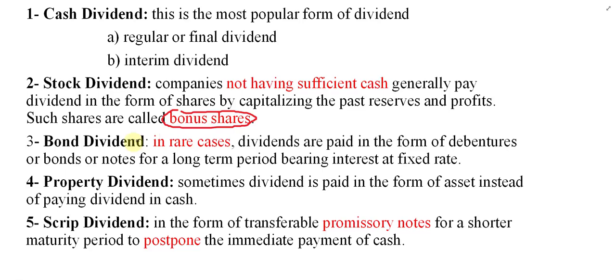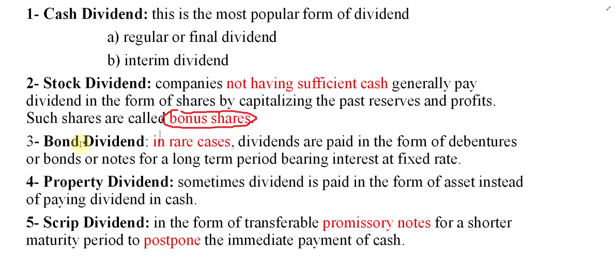The next type is bond dividend. If the company distributes bonds as a dividend among the shareholders, this is called a bond dividend. This rarely happens in business. It occurs when there is not enough cash and the company does not want to distribute shares; instead, they distribute bonds. Shareholders then become bondholders as well, and they receive a fixed rate of interest for those bonds. Issuing bonds also increases the financial risk of the company.